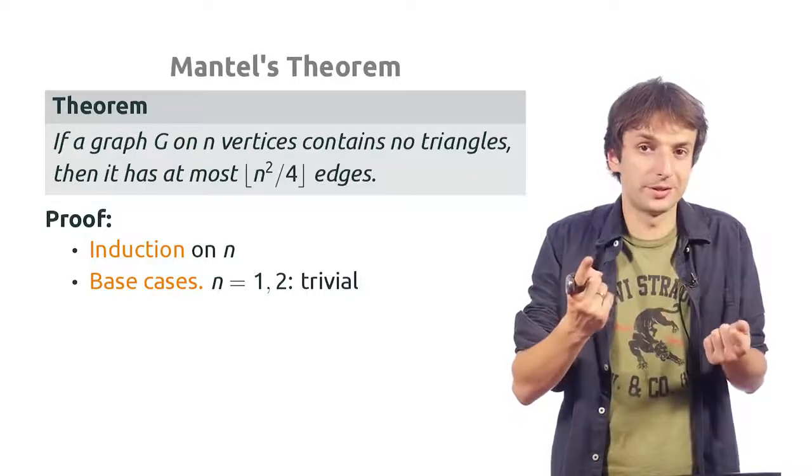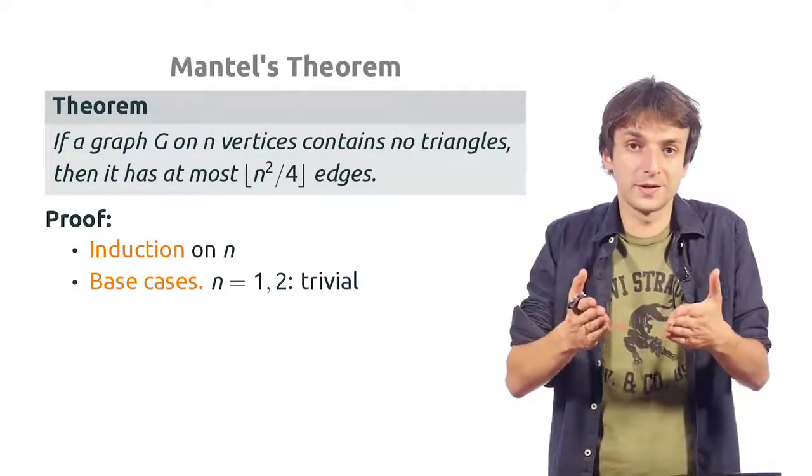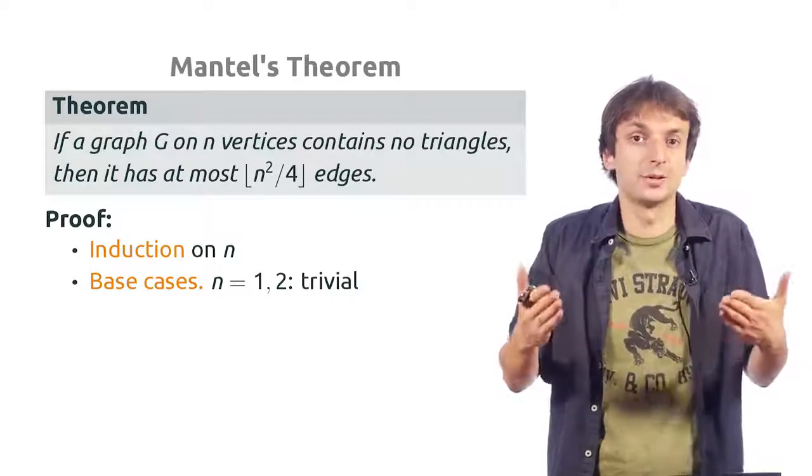And actually floor of n squared over 4, in this case is floor of 1 fourth, is 0 too.